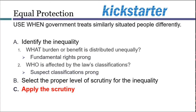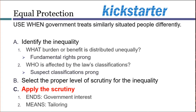The basic idea behind any kind of judicial review is to decide if the government has a good enough reason for doing what it's doing. So the modern case law divides that inquiry into two separate questions. We have the ends — what goal the government is pursuing — and we have the means, the methods that the government uses to pursue those ends.